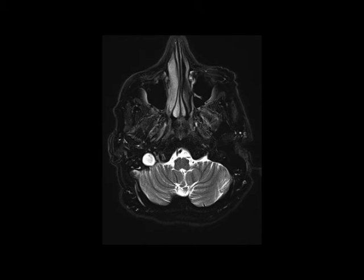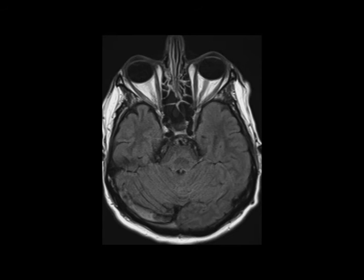The axial T2-weighted image demonstrates increased T2 signal intensity in the distal transverse and proximal right sigmoid sinus on the right, with additional increased T2 signal intensity at the proximal right internal jugular bulb.